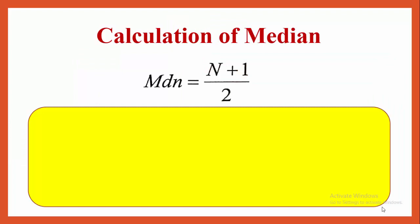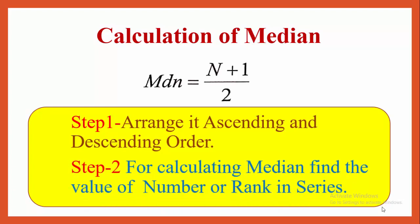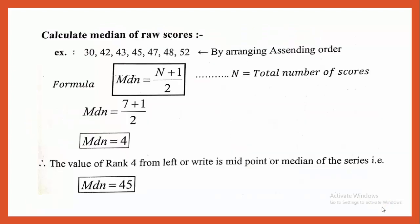Calculation of median when ungrouped data or raw scores are given: we use the formula for finding the value of median = (N + 1) / 2. Step 1: arrange raw scores in ascending or descending order. Step 2: for calculating median, find the value of number or rank in the series.